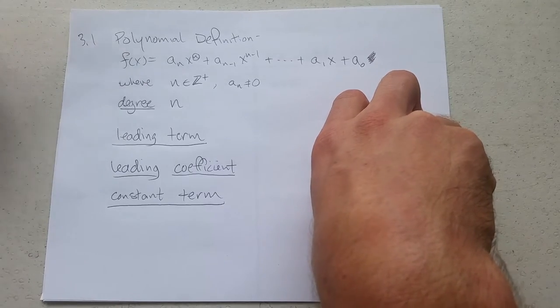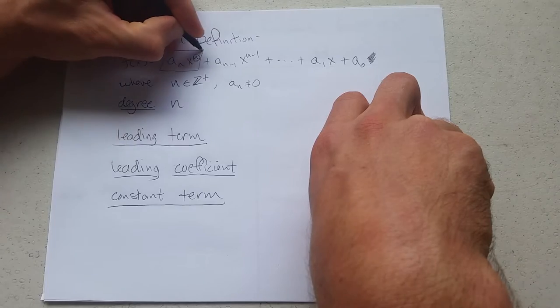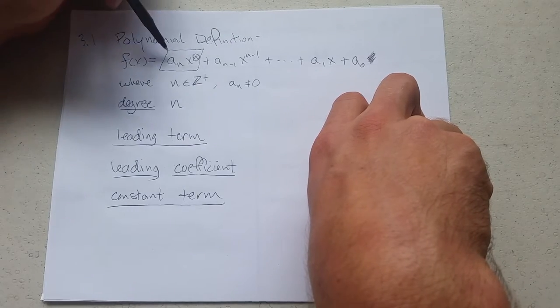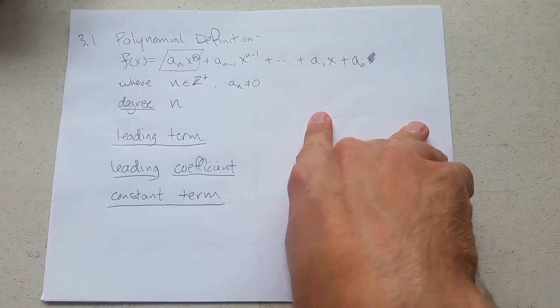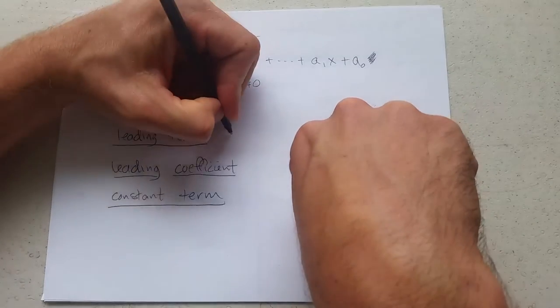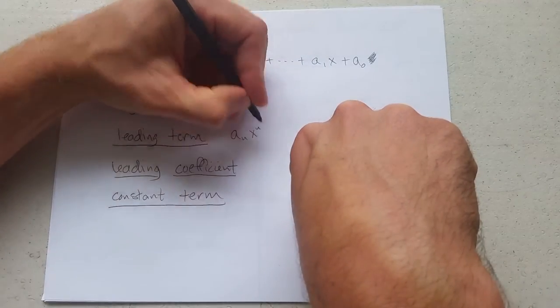What is the leading term? Well, this one is in the lead. It has the highest power. So I'm going to circle it. It's important. Right here, a_n x to the n. So the leading term is a_n x to the n.